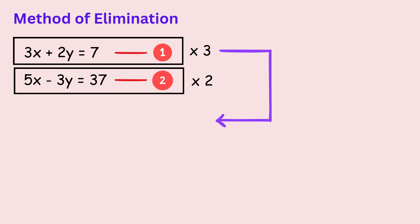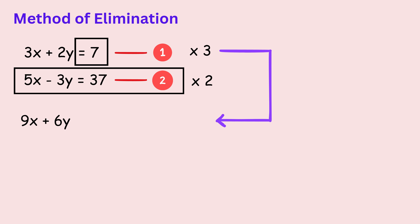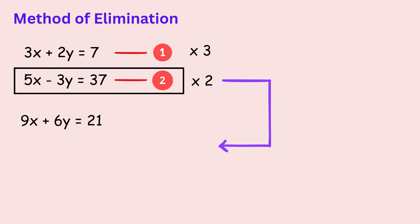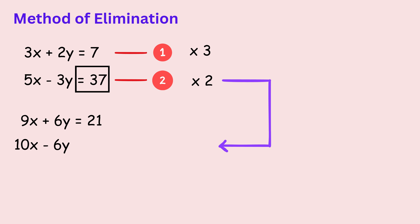After multiplying the first equation by 3, every term in that equation changes. 3x becomes 9x, 2y becomes 6y. The number on the other side also gets multiplied by 3 and becomes 21. Now we do the same for the second equation. 5x becomes 10x, minus 3y becomes minus 6y. The number on the other side becomes twice of 37, or 74.